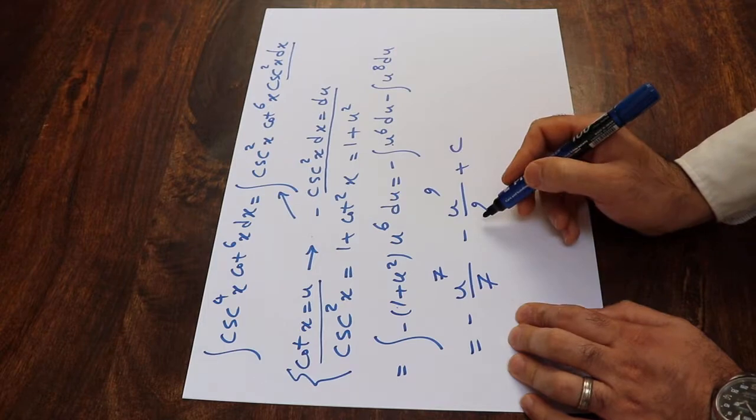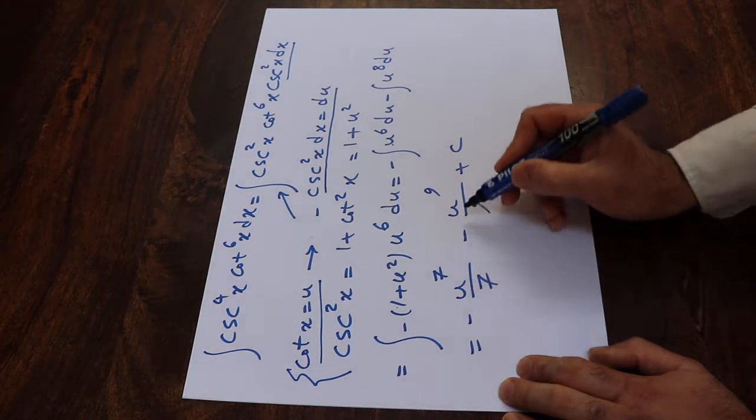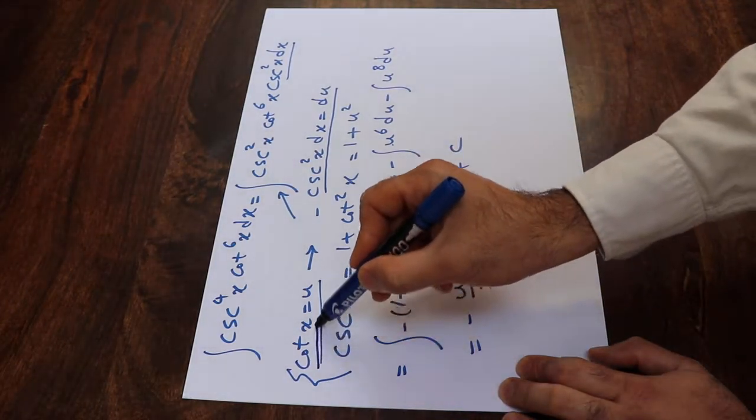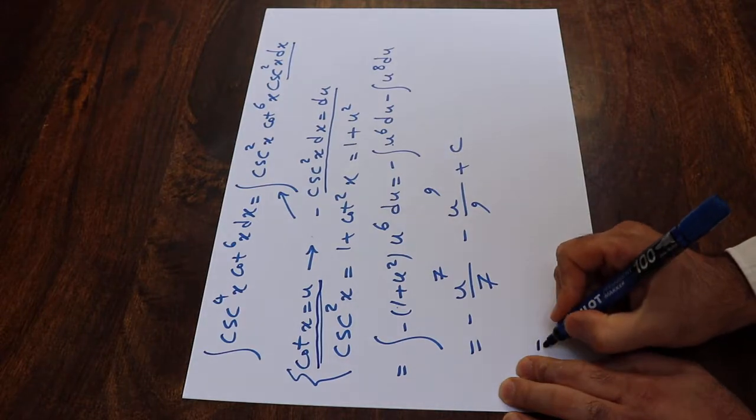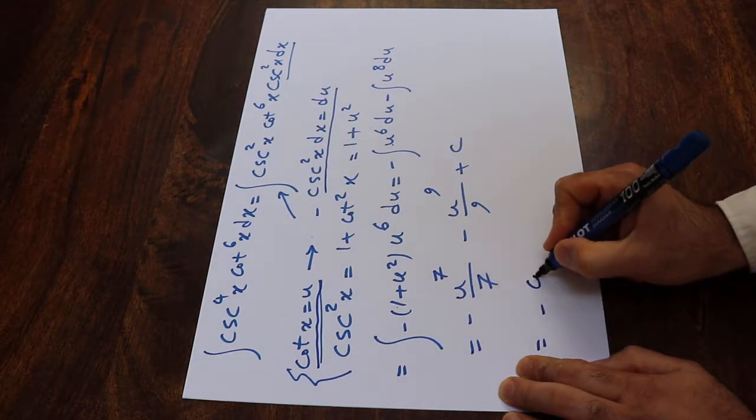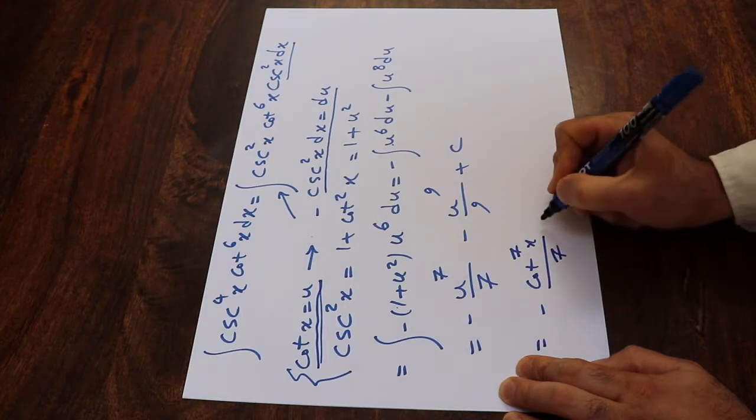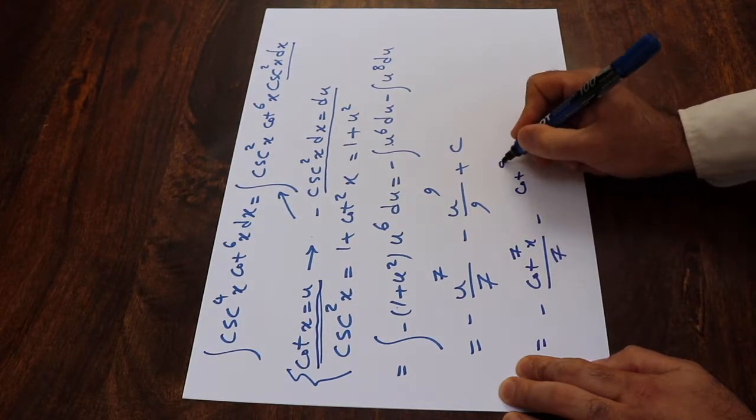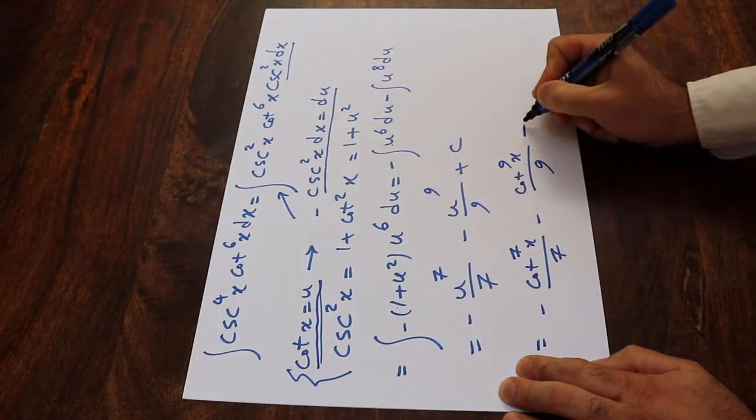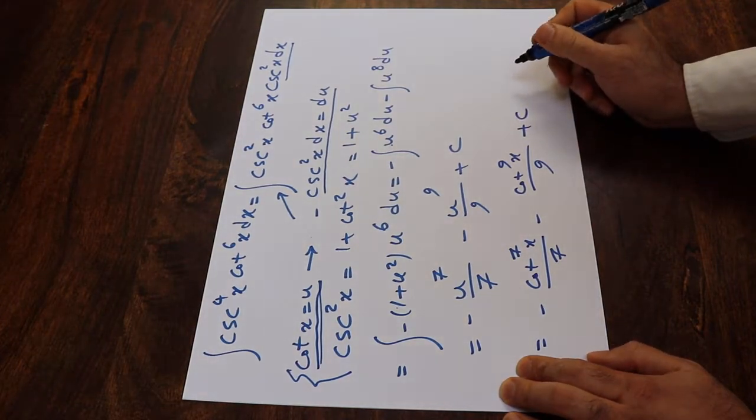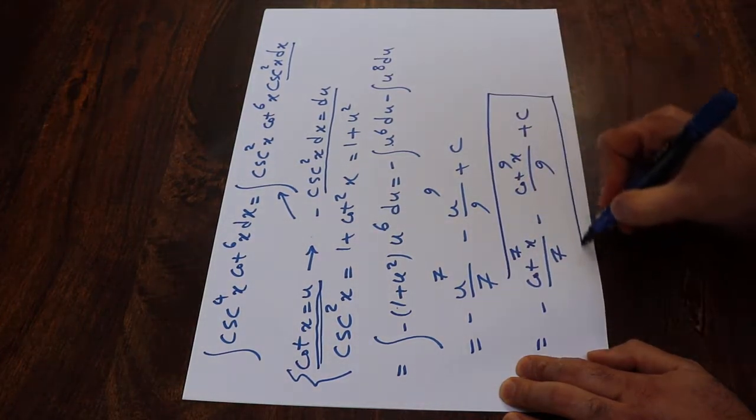So all you need to do is substitute this parameter u with the definition of u, which is cotangent x. Therefore this equals minus cotangent 7x divided by 7 minus cotangent 9x divided by 9 plus C, which is the solution to our integral.